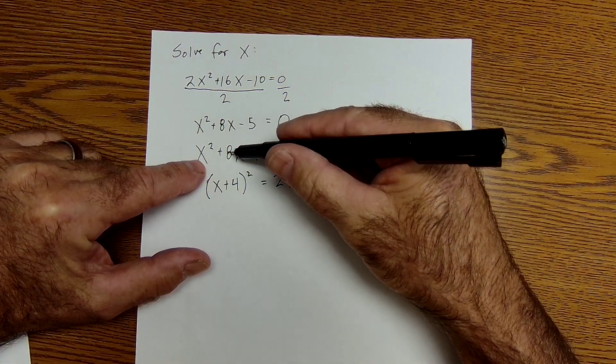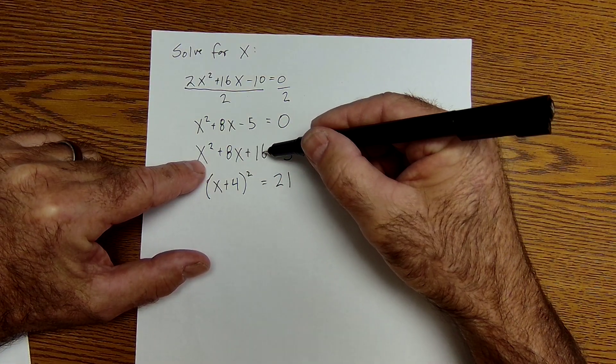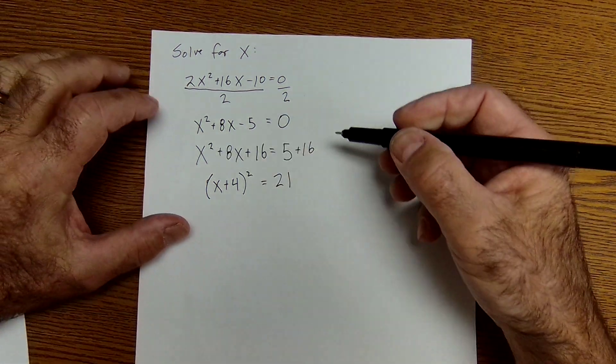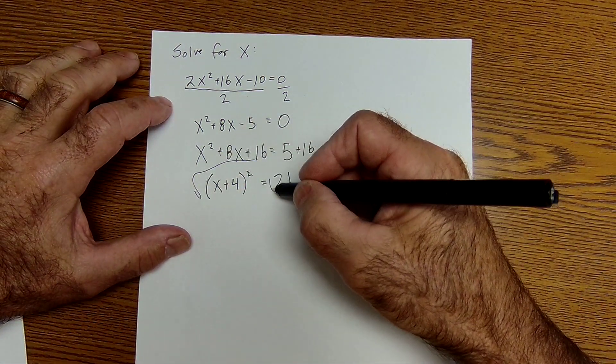By taking that, cutting it in half, and squaring it, it gives me X plus 4. So now I can factor that to X plus 4 squared. Square root of both sides.